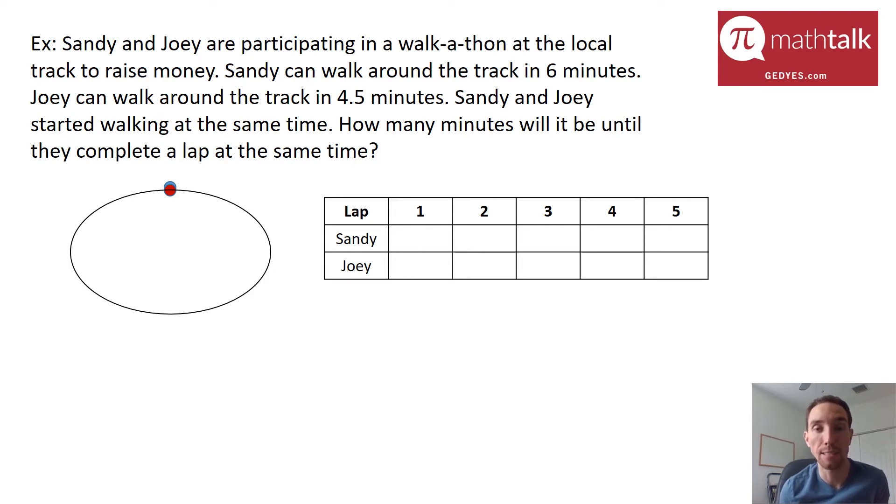It may not necessarily be on the same lap, but the numbers are going to be the same because that's the number of minutes when they're completing a lap. After one lap, we have 6 and 4.5. After two laps, Sandy takes 12 minutes and Joey 9 minutes. After three laps, it's 18 and 13.5. After four laps, 24 and 18 minutes. After five laps, 30 and 22.5 minutes. We can continue on, really forever, but we're going to stop here because